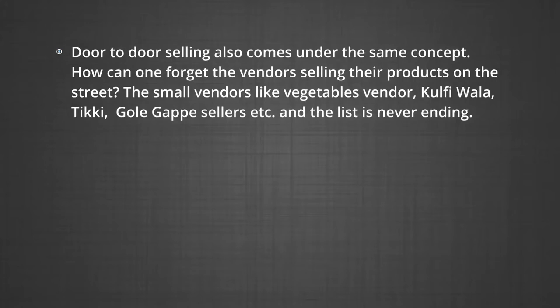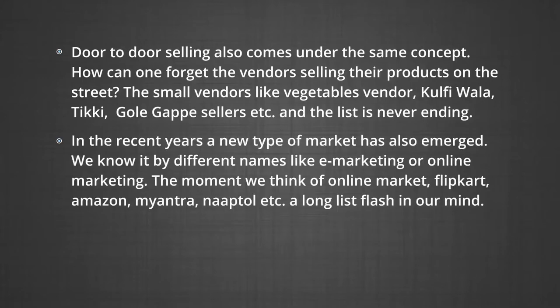How can one forget the vendors selling their products on the street? The small vendors like vegetables vendor, Kulfiwala, Tikki, Golgapay sellers, etc. — and the list is never ending. In recent years, a new type of market has also emerged. We know it by different names like e-marketing or online marketing. The moment we think of online markets like Flipkart, Amazon, Myntra, Naptol, etc., a long list flashes across our mind.